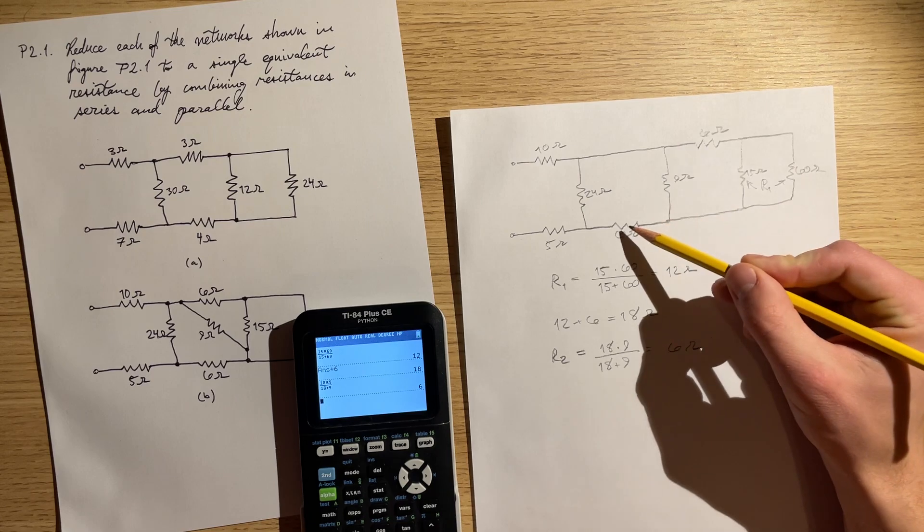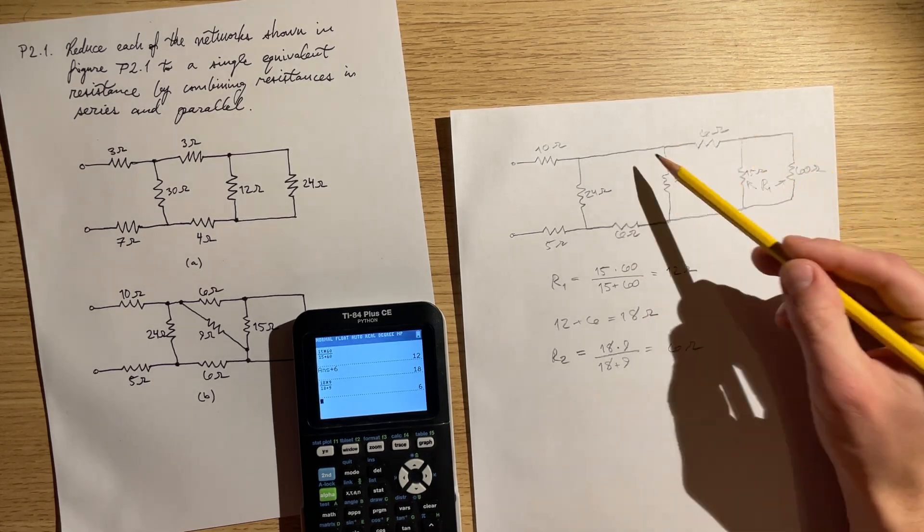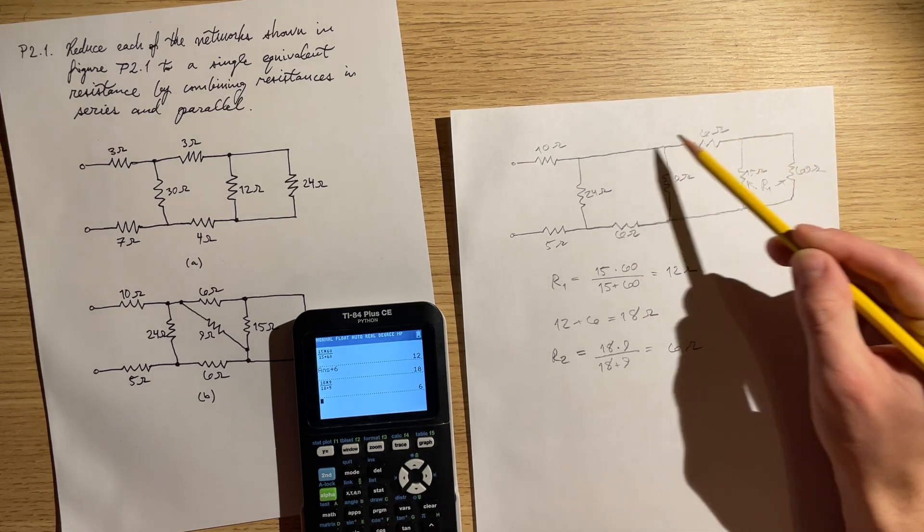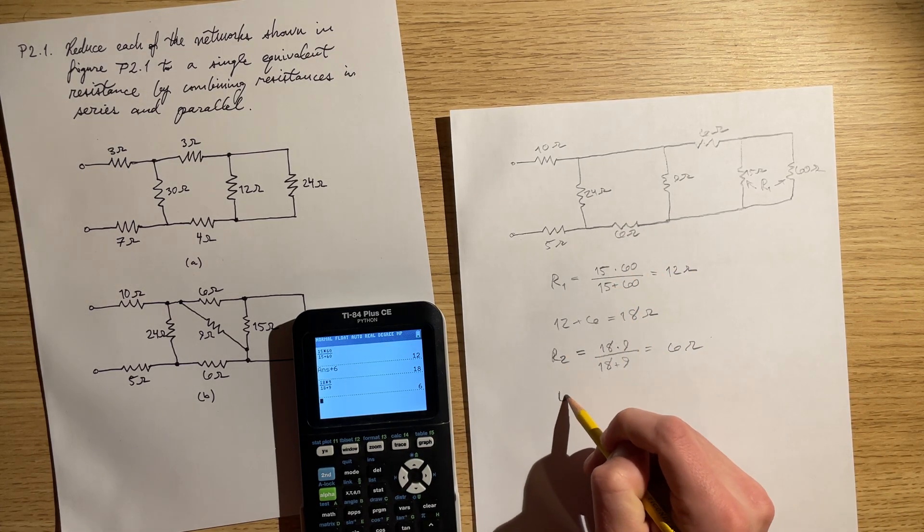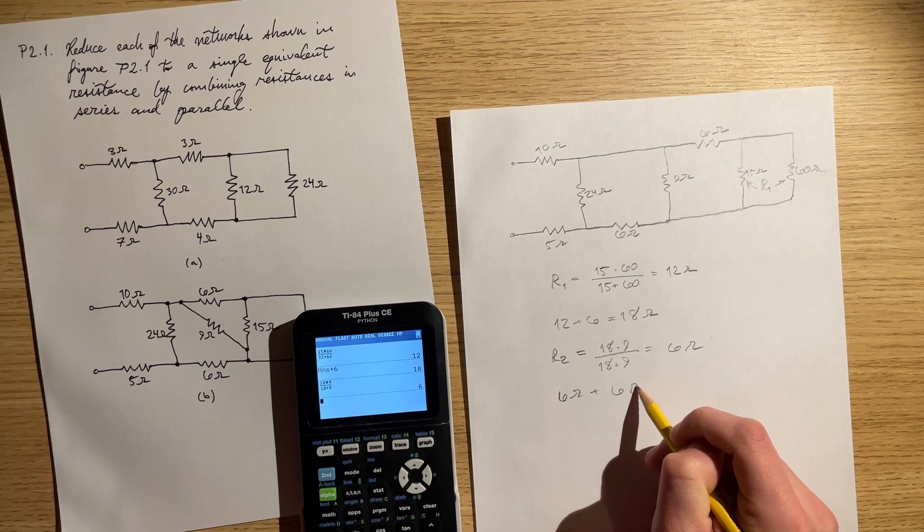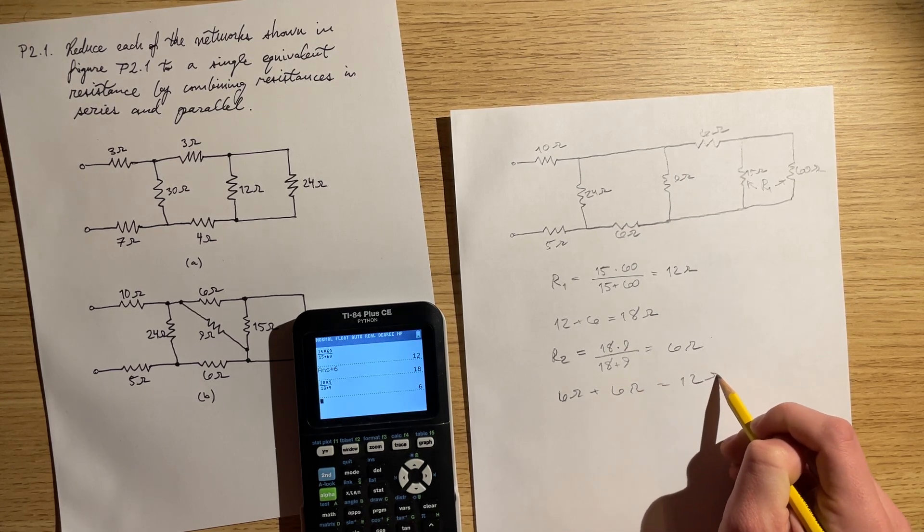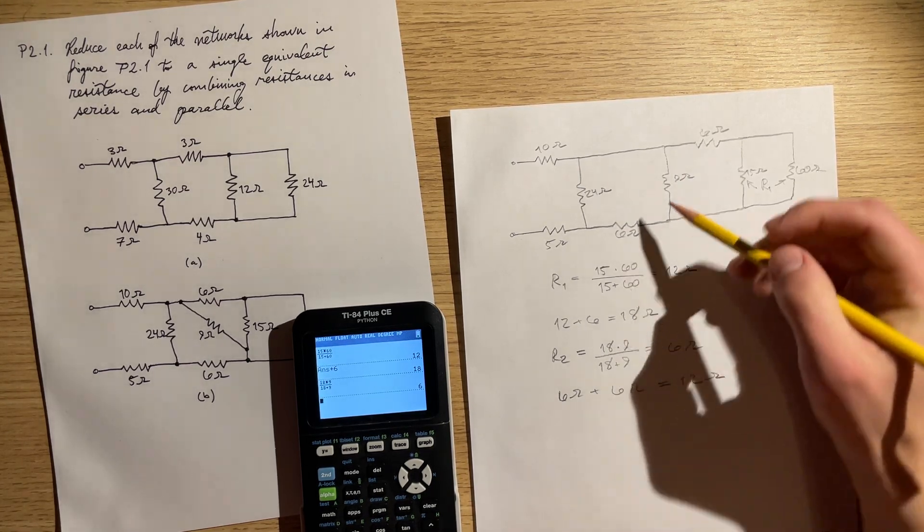Now we can add that in series with this whole circuit. This whole circuit is 6 ohms. Add that in series to this. So plus 6, 6 ohms plus 6 ohms is 12 ohms right there.